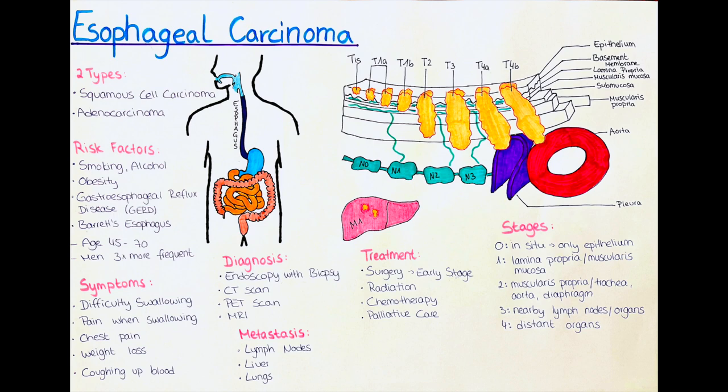Risk factors for developing esophageal carcinoma include smoking, alcohol consumption, obesity, gastroesophageal reflux disease, Barrett's esophagus, and a family history of the disease. The age of diagnosis for most patients is between 45 and 70, and men are around three times more commonly affected than women.